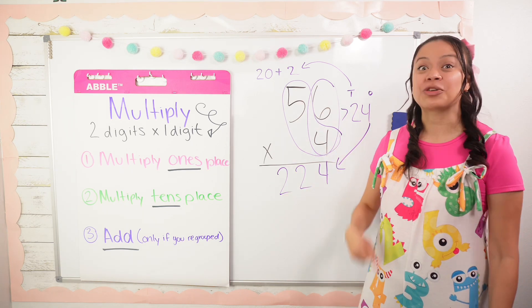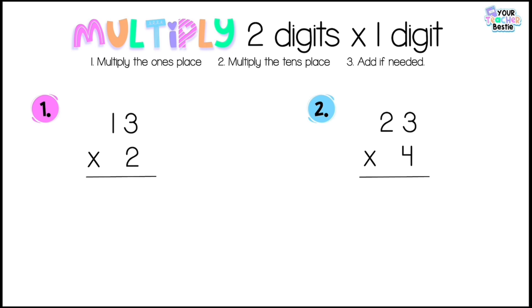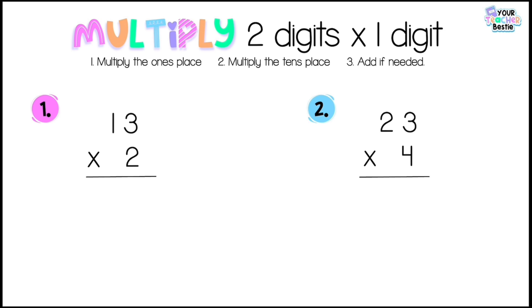Now it's our turn to practice together — grab a paper, pencil, or whiteboard. Feel free to pause and work ahead or just follow along. Write 13 times 2. Step one: multiply the ones place — butterfly wing — 3 times 2 is 6. No regrouping needed since it's one digit. Step two: multiply the tens place — 1 times 2 is 2. Our product is 26.